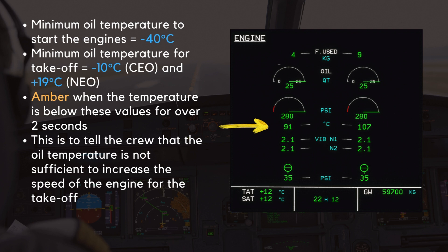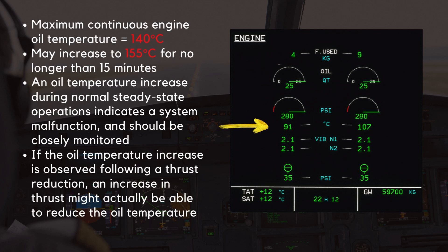This is to tell the crew that the oil temperature is not sufficient to increase the speed of the engine for the takeoff. The maximum continuous engine oil temperature is 140 degrees C. However, this value may increase to 155 degrees C for no longer than 15 minutes. An oil temperature increase during normal steady state operations indicates a system malfunction and should be closely monitored for other symptoms of engine malfunction. If the oil temperature increase is observed following a thrust reduction, an increase in thrust might actually be able to reduce the oil temperature.